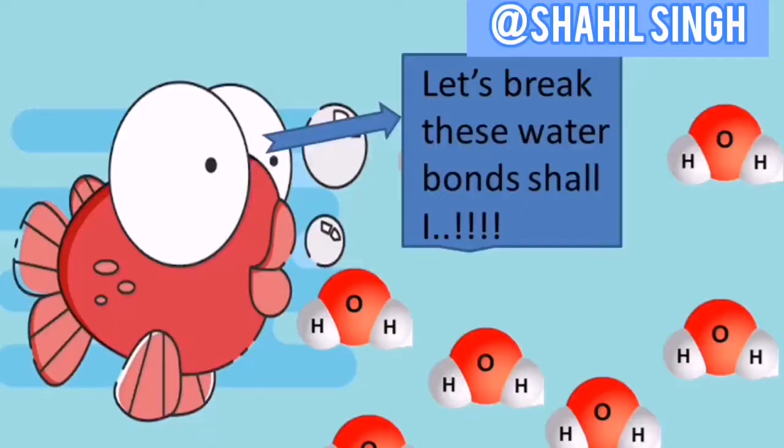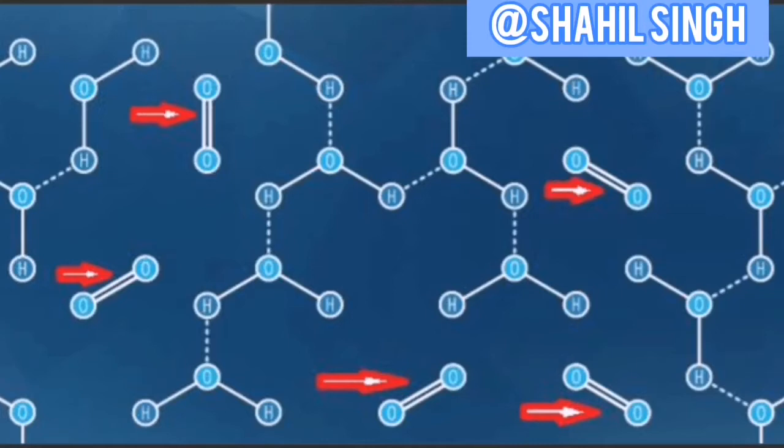Many of you would have been thinking that fishes are somehow capable of breaking water bonds to free up oxygen and hydrogen from H2O molecules and then use those oxygen molecules — that's incorrect. Fishes are not that capable; in fact, no organism is capable of breaking atomic bonds. Fishes use dissolved oxygen content in water. Oxygen is already present in molecular form between the intermolecular spaces of water molecules, and fishes breathe through those free oxygen molecules. Since this oxygen content is fairly low compared to the environment, fishes have fast breathing rates.